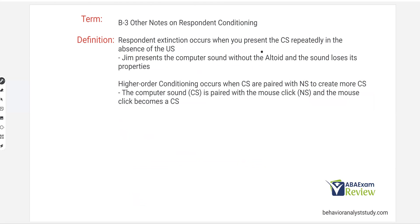Respondent extinction occurs when you present the CS repeatedly in the absence of the US. If Jim presented that computer sound over and over again without the altoid, the sound loses its property. Higher-order conditioning occurs when a conditioned stimulus is paired with a neutral stimulus to create more conditioned stimuli — so instead of taking an unconditioned stimulus and pairing it with a neutral stimulus, you're taking a conditioned stimulus to create more conditioned stimuli.